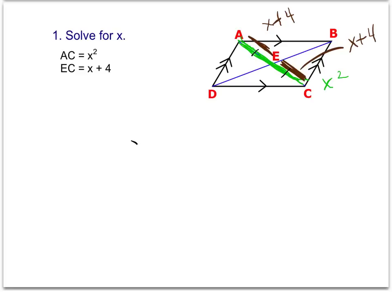We know now that x plus 4 plus the other x plus 4 is going to equal the whole diagonal of x squared. Now we have an equation, and solving for x, we're going to use our algebra to solve the equation.